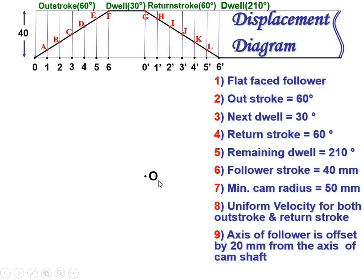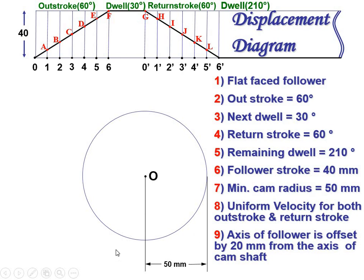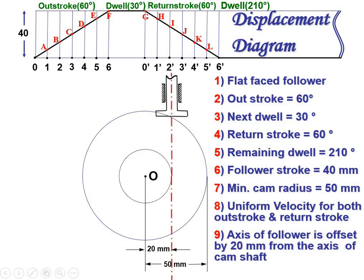Now let's start the cam profile. Take any point, label it O. The minimum cam radius is 50 mm, so draw the base circle with radius 50 mm. The offset distance is 20 mm, so draw an offset circle with radius 20 mm. Draw the center line tangent to this circle, with the distance between the two lines being 20 mm. Draw the symbol for the flat face follower, label the point zero, and join zero to O — this is your initial reference line. Since the direction of the cam is not given, assume clockwise direction.